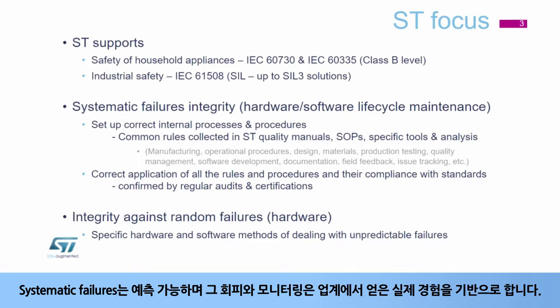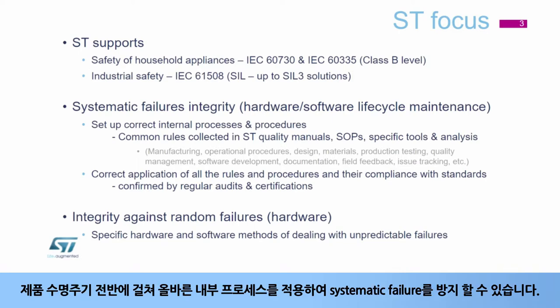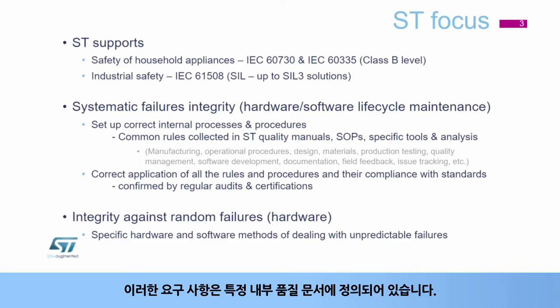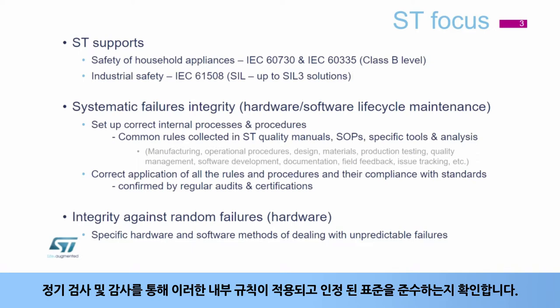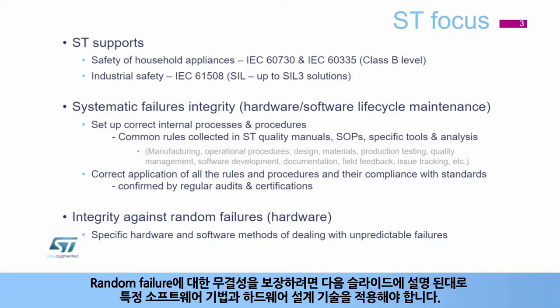Systematic failures are predictable and their avoidance and monitoring are based on practical experience gained in the industry. Systematic failures can be avoided mainly by applying correct internal processes throughout a project's life cycle. These requirements are defined in specific internal quality documentation; regular inspections and audits ensure that these internal rules are applied and comply with the recognized standards. To ensure integrity against random failures, specific software methods and hardware design techniques must be applied.